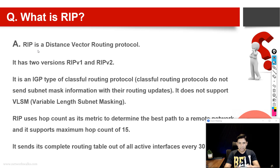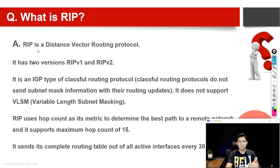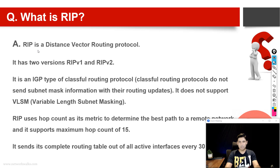Classful means it can support only classful subnetting, which means slash 8, slash 16, and slash 24 — Class A, B, C. RIP version 1 is classful, while RIP version 2 is a classless routing protocol, which means it can transmit subnet information along with routing updates. This is one of the major differences between the two versions.